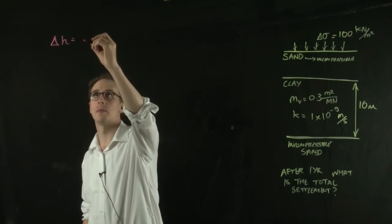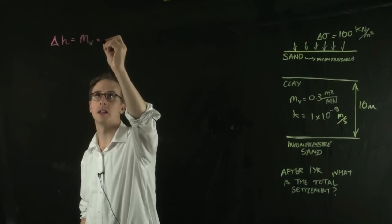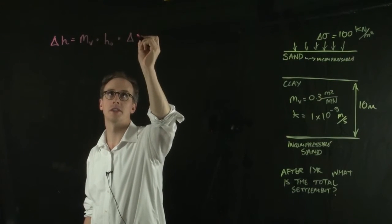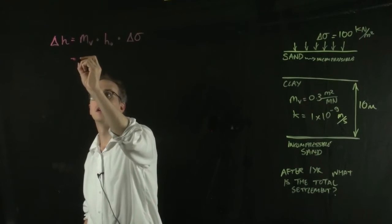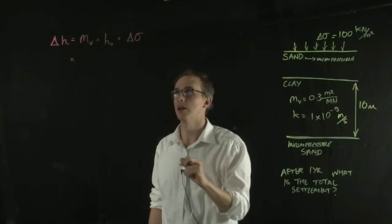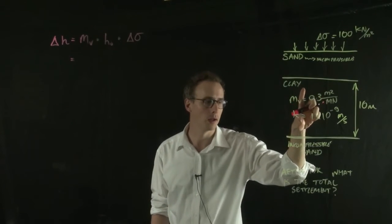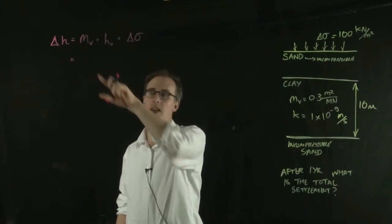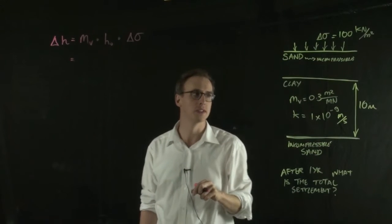So if we multiply by MV, initial sample thickness, and the change in stress, take our change in stress to be 100, our initial soil thickness to be 10 meters, and the MV value here to be 0.3.